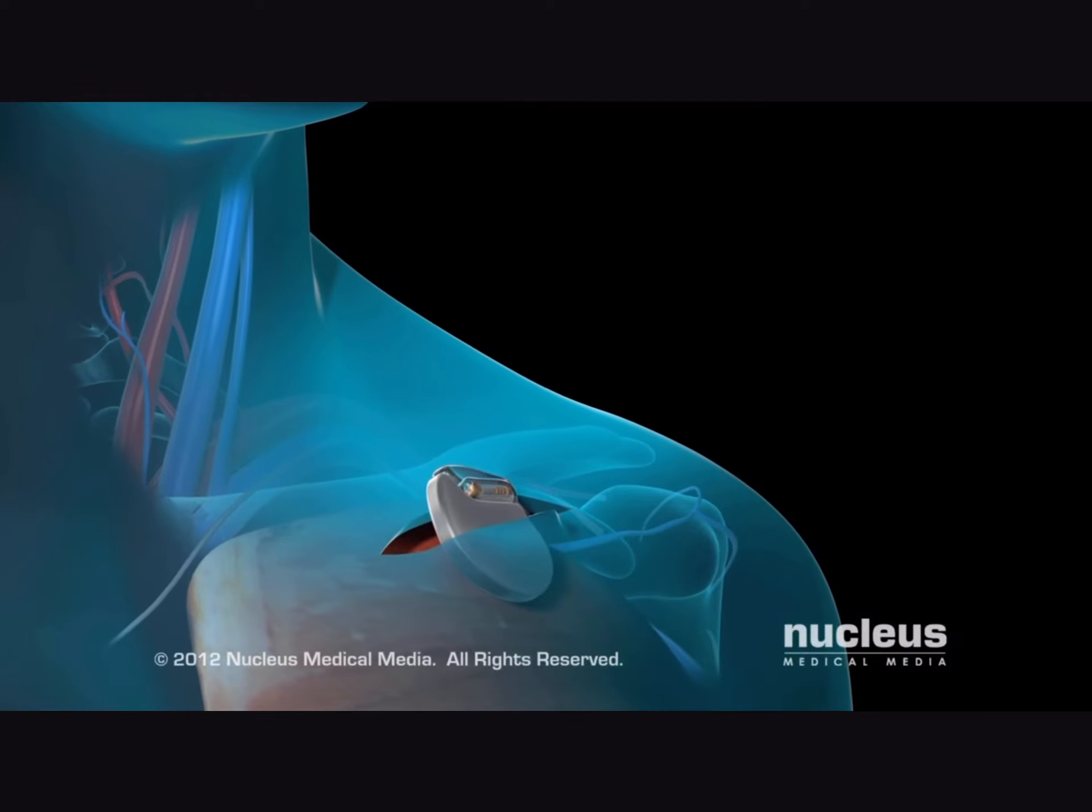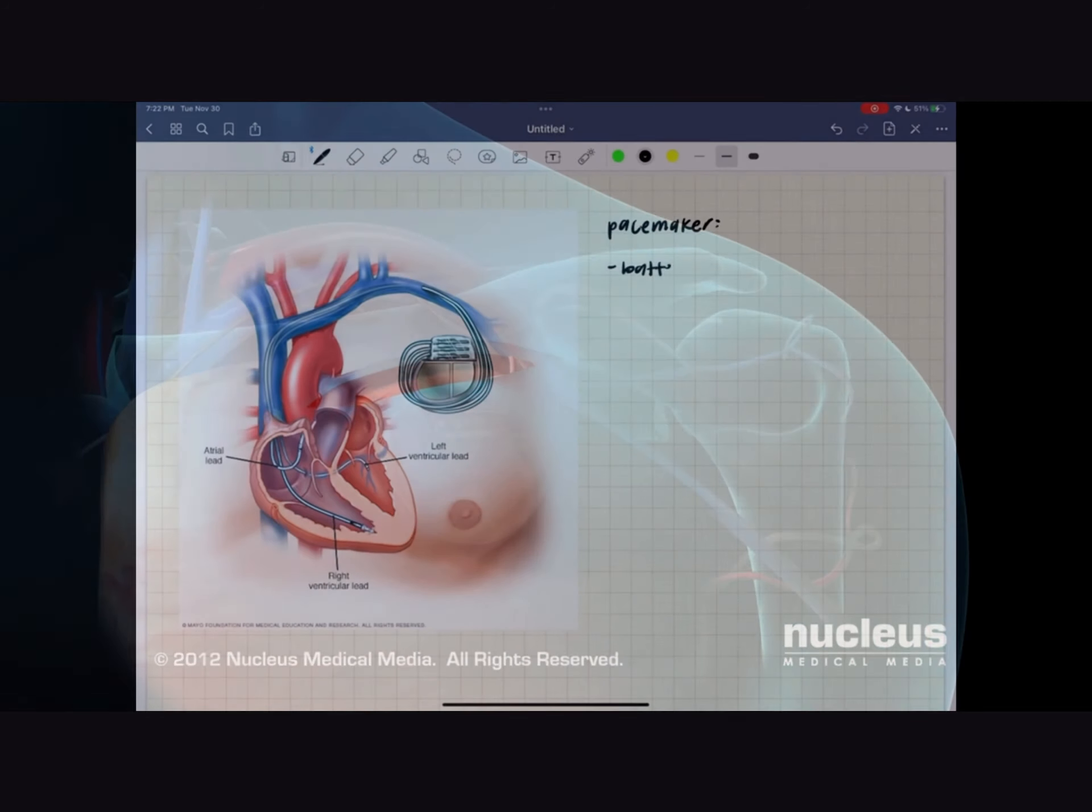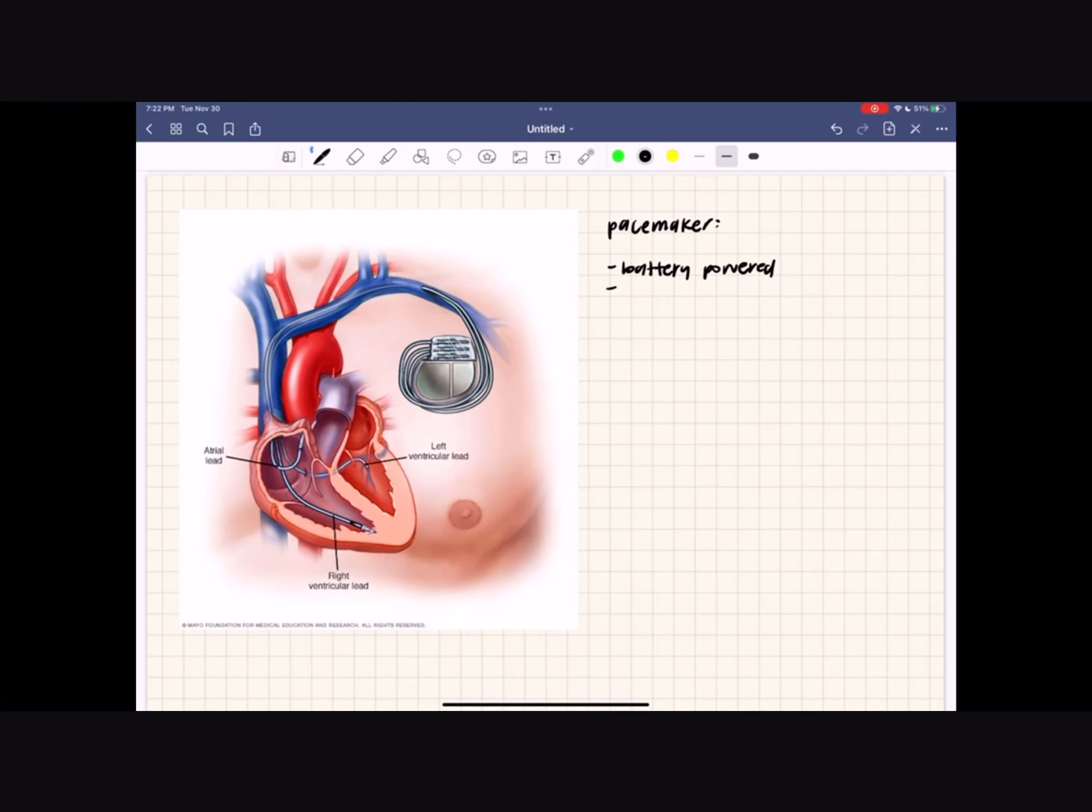For sick sinus syndrome, the common treatment is an implanted artificial electronic pacemaker. It is a small battery-powered electronic device that gets implanted under the skin near the collarbone. The pacemaker is programmed to help stimulate the heart as needed to keep it beating normally.